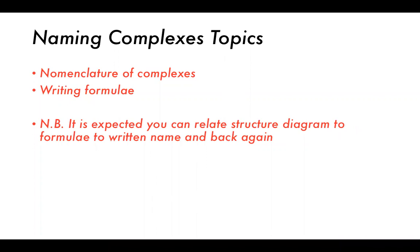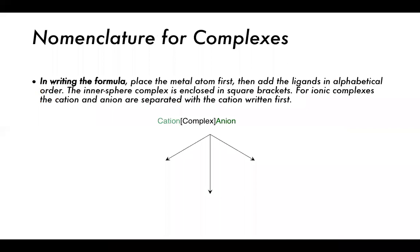The names are going to be descriptive, giving you a basis for what you'll draw, and once you've drawn the structure you can relate it back to the original name. In writing the formula, we place the metal atom first, then add the ligands in alphabetical order, then the inner sphere complex is enclosed in square brackets. For ionic complexes, the cation and anion are separated with the cation first. Many complexes are positively charged and need a counter ion — the outer sphere ion — which is not datively covalently bonded to the metal, but is important for charge balance.